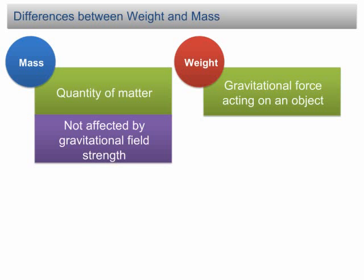Mass is independent of gravitational field strength, which means it is not affected by the gravitational field strength. For example, if you put an object on the surface of the Earth or on the surface of the Moon, the mass will be the same.